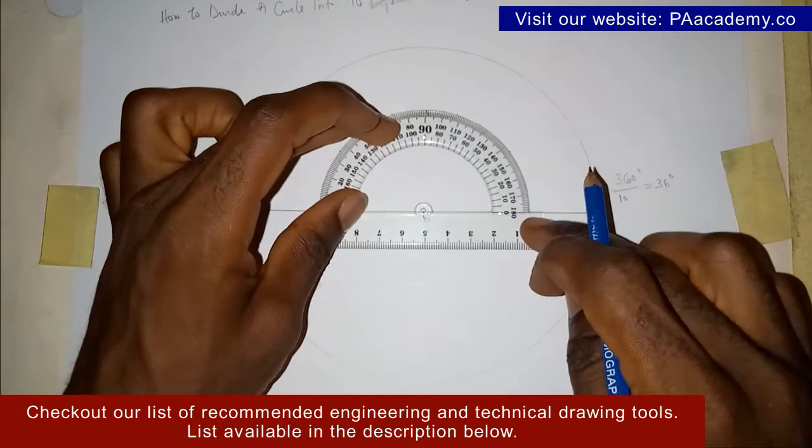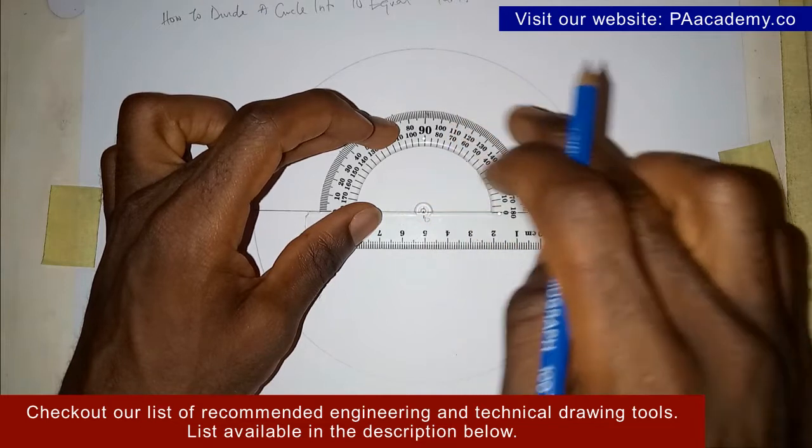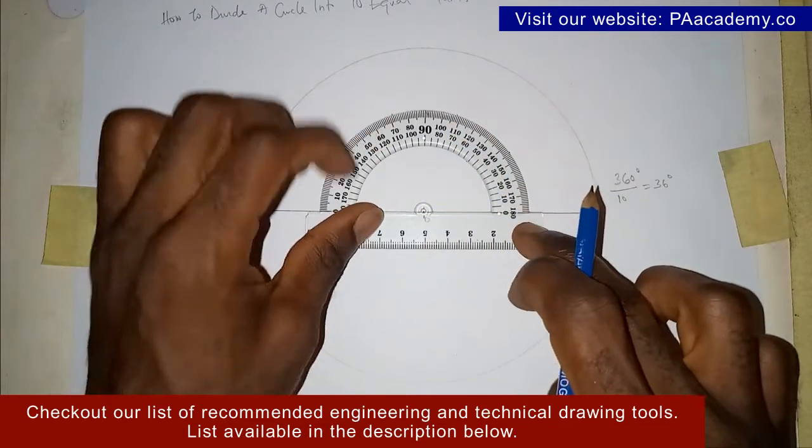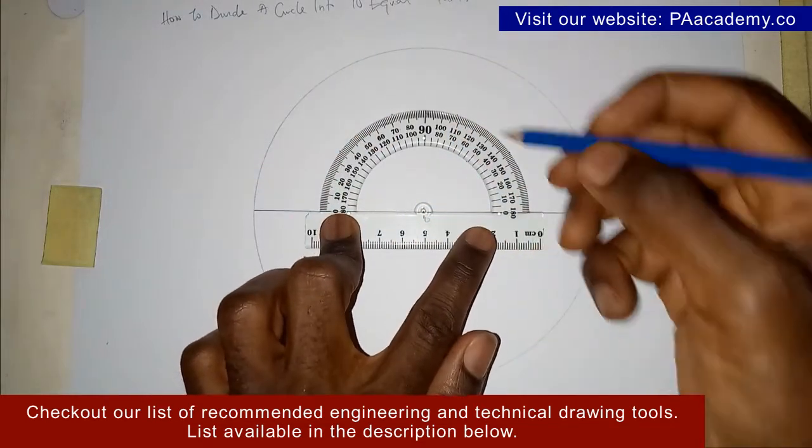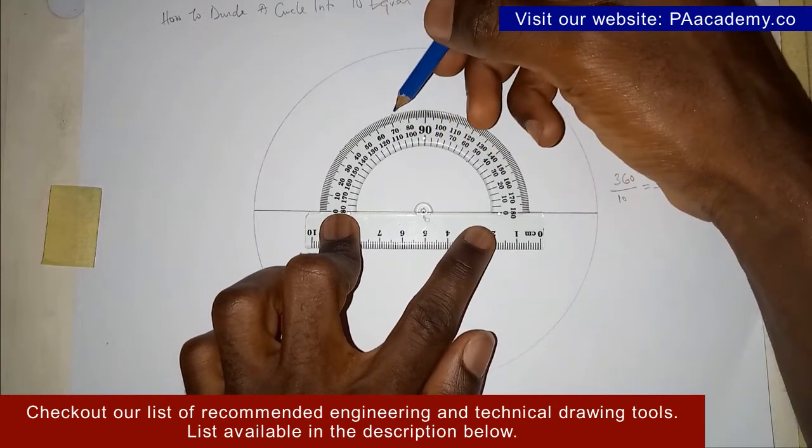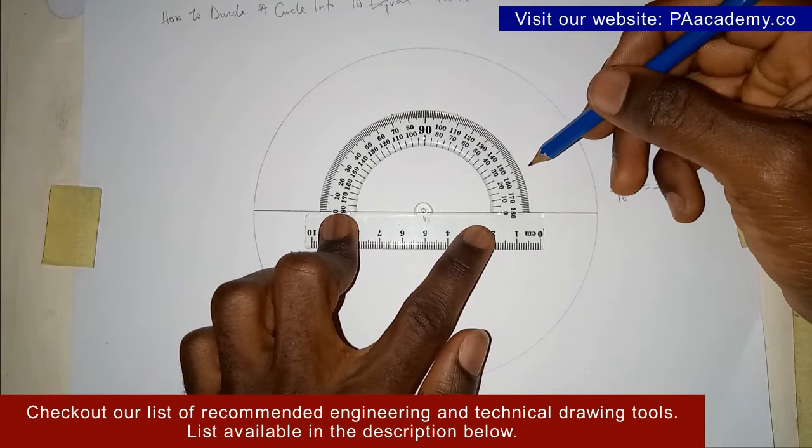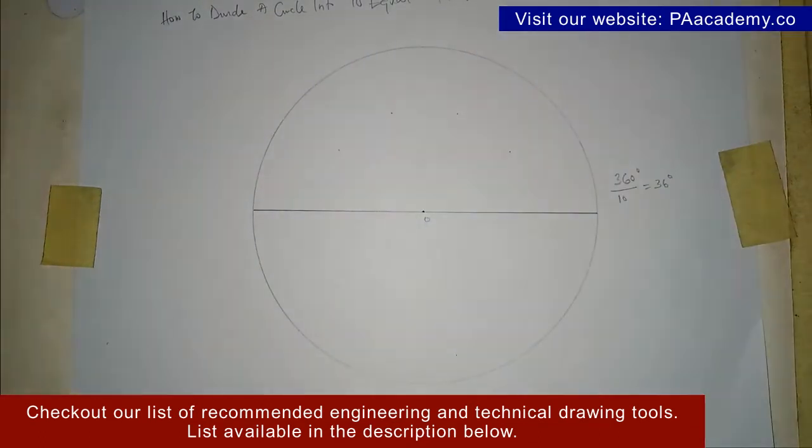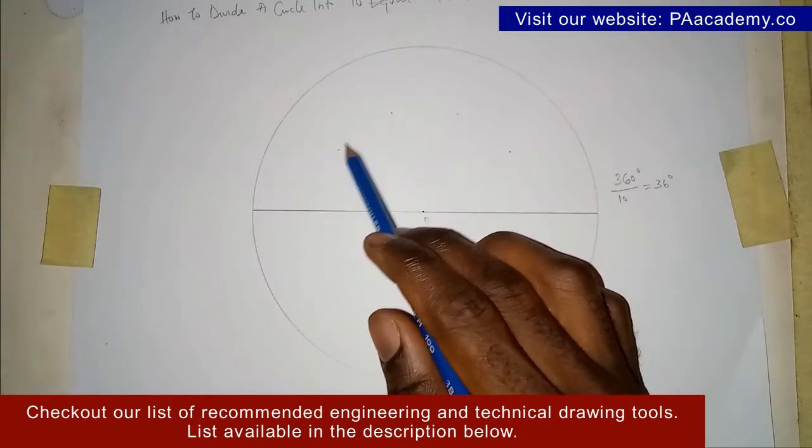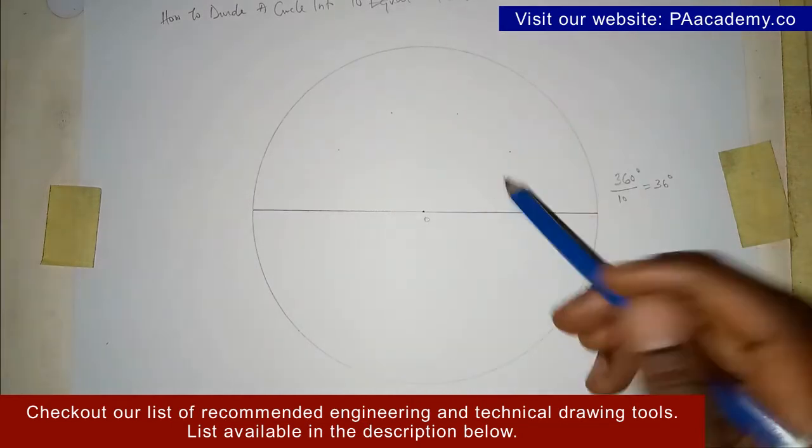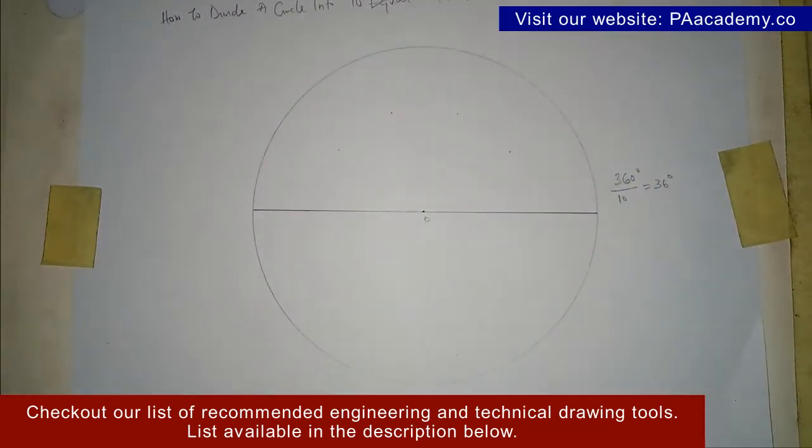If your protractor goes up to 360 degrees, then you continue like that at 36-degree intervals. But if yours is 180 like mine, once you mark 36 degrees, 72, 108, and 144, you can just take it off. You'll notice those points: one, two, three points.